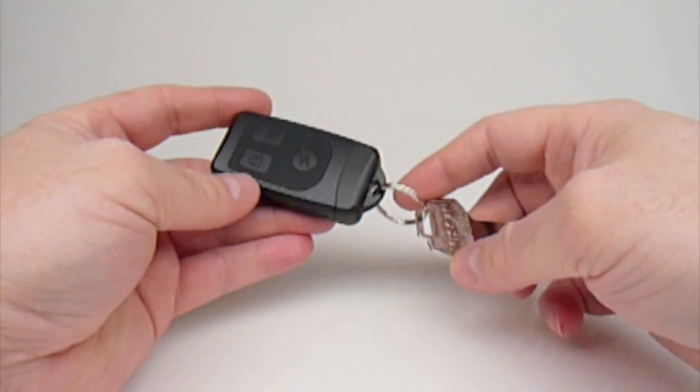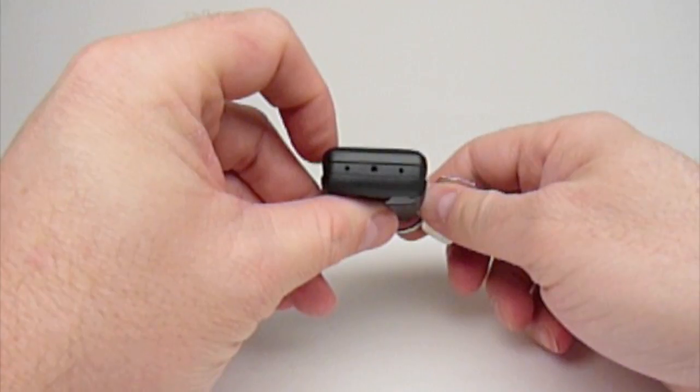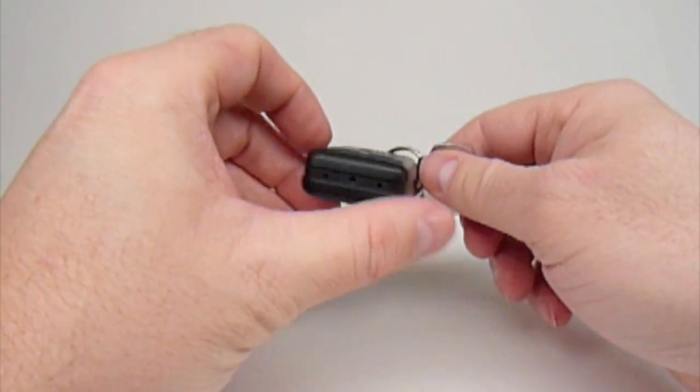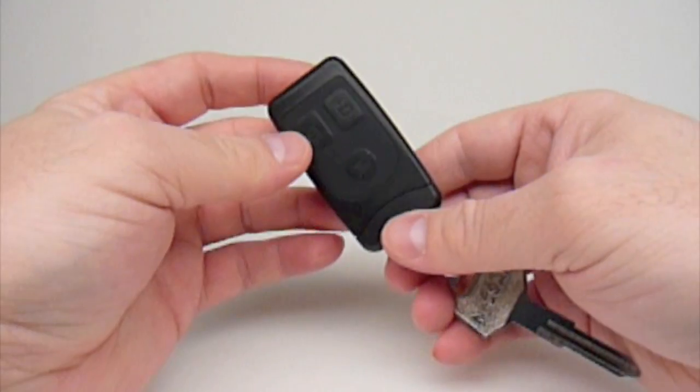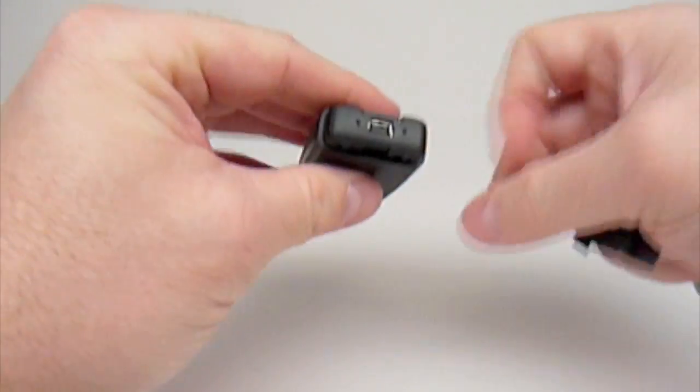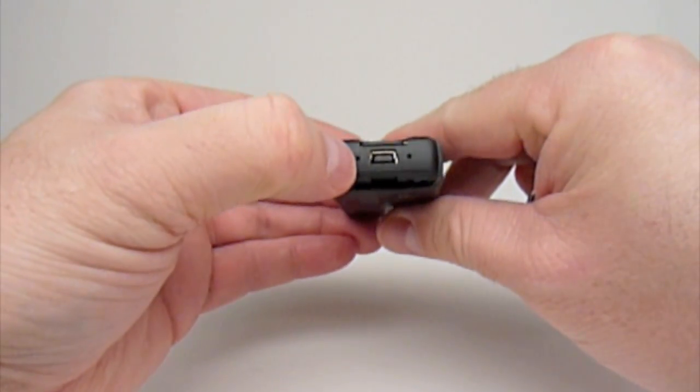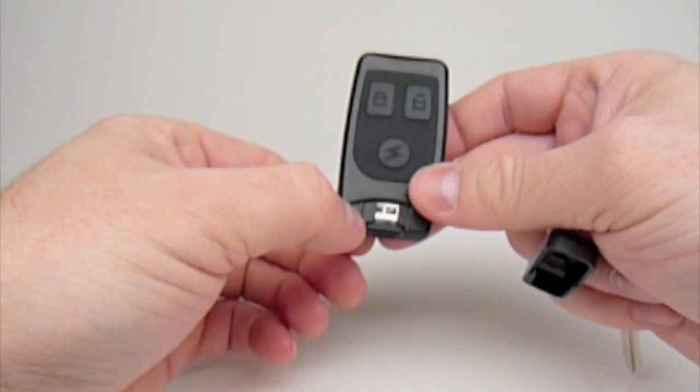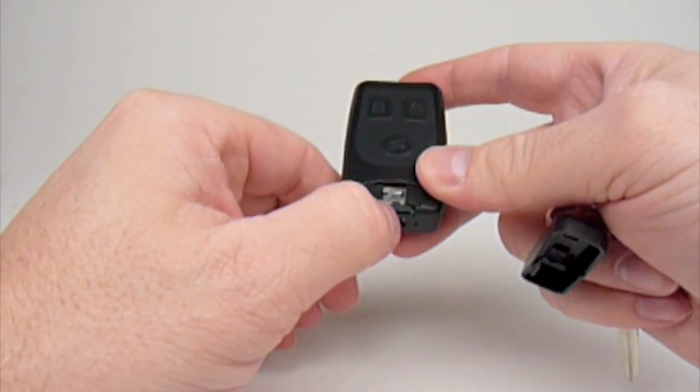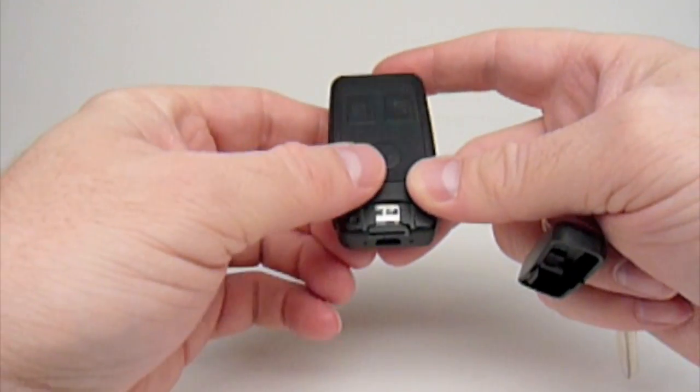Here we have the Lawmate key fob keychain hidden camera DVR system. It looks just like the key fob you'd use to activate your car's alarm. Three button operation, with a status indication light, USB port, charging indication light, tiny reset button, and micro SD card slot.